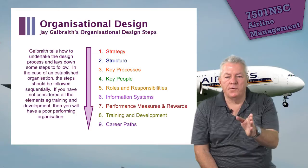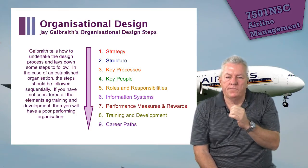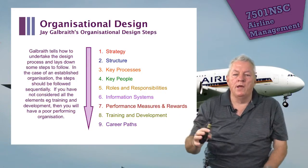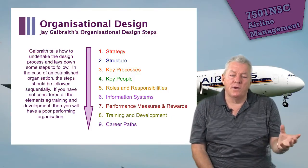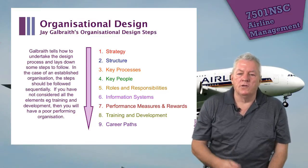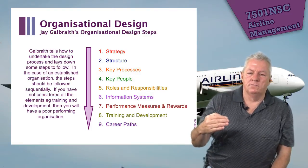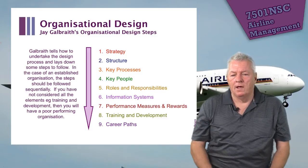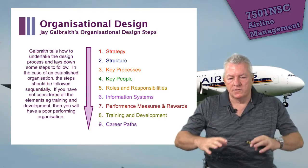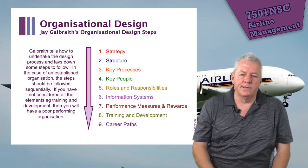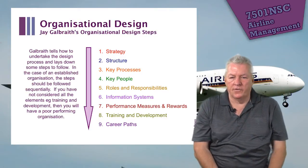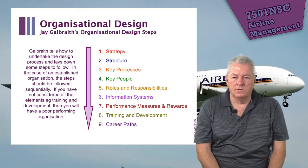Galbraith went on to outline a number of steps you need to follow. First, develop your strategy, then develop your structure. You need to understand your key processes, your key people, and their roles and responsibilities. You need to understand what information systems you'll be using, define performance measures and rewards, and understand that training and development will grow your organization. Many organizations forget about professional development — it helps grow capacity and career paths for staff. Following these steps will give you a very healthy organizational structure.